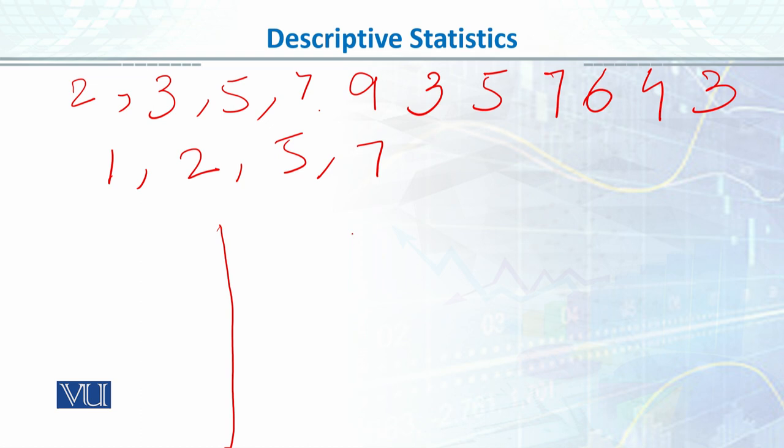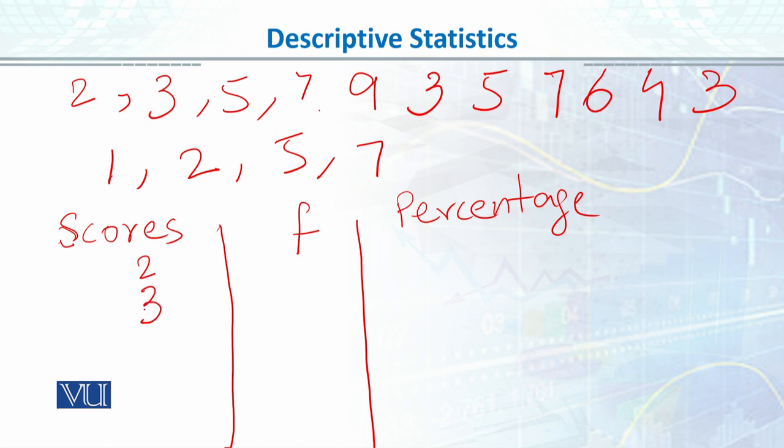In our frequency distribution usually you have 3 columns. You have one is the score column, then frequency, and then percentage column. Because this is ungrouped data, so far I am just running ungrouped data frequency distribution which is score 2, 3, 4, 5, 6, 7, 8, 9, 10.